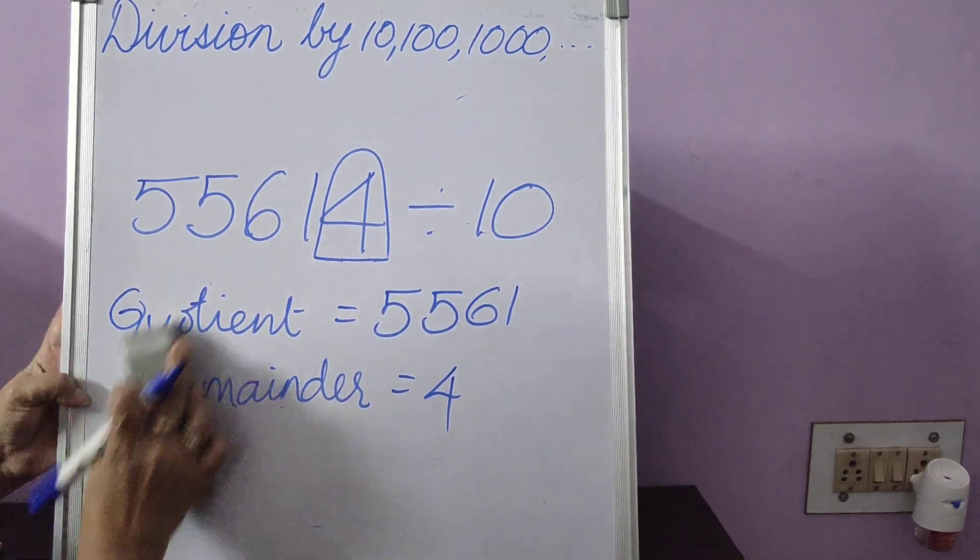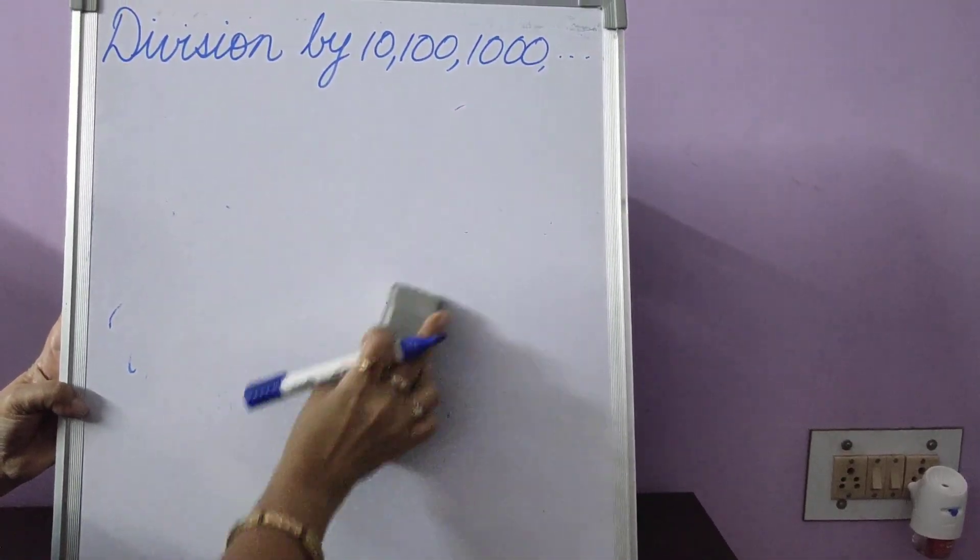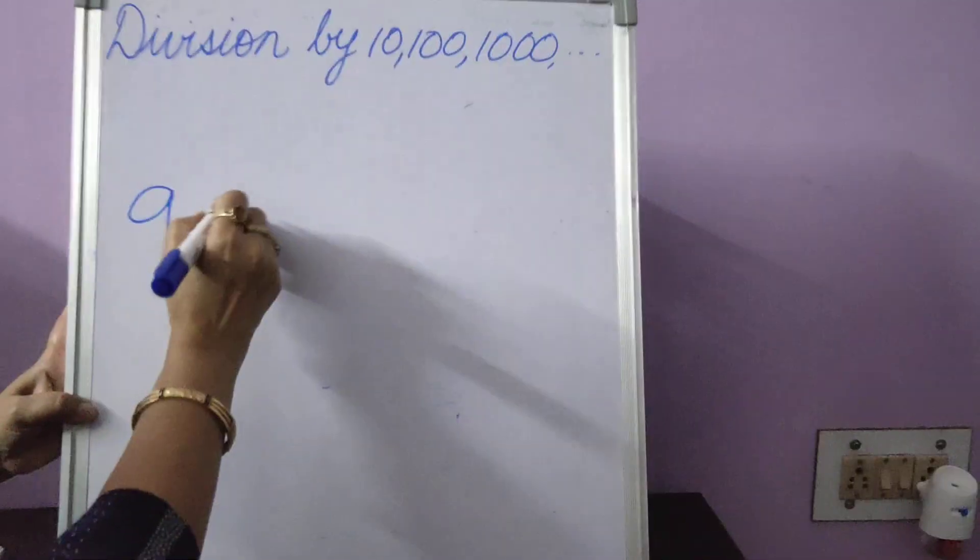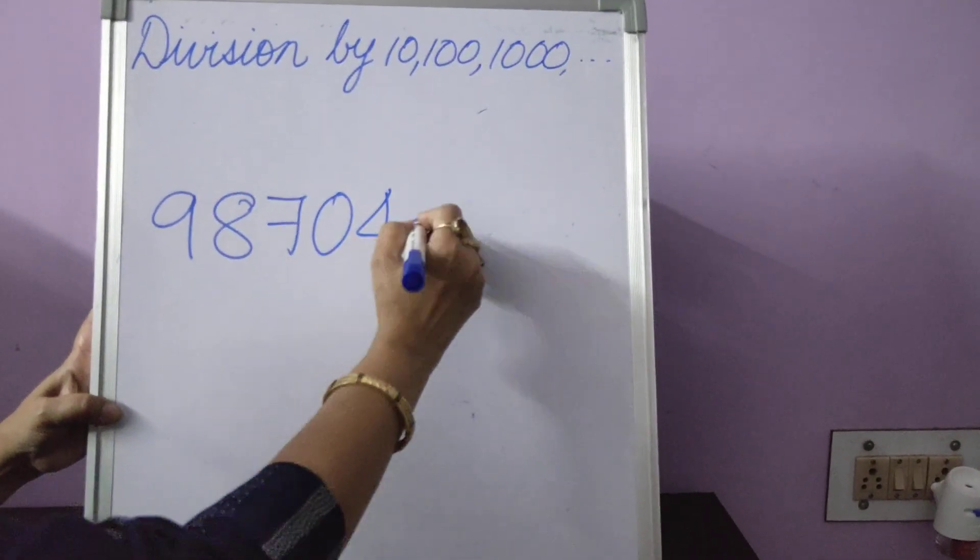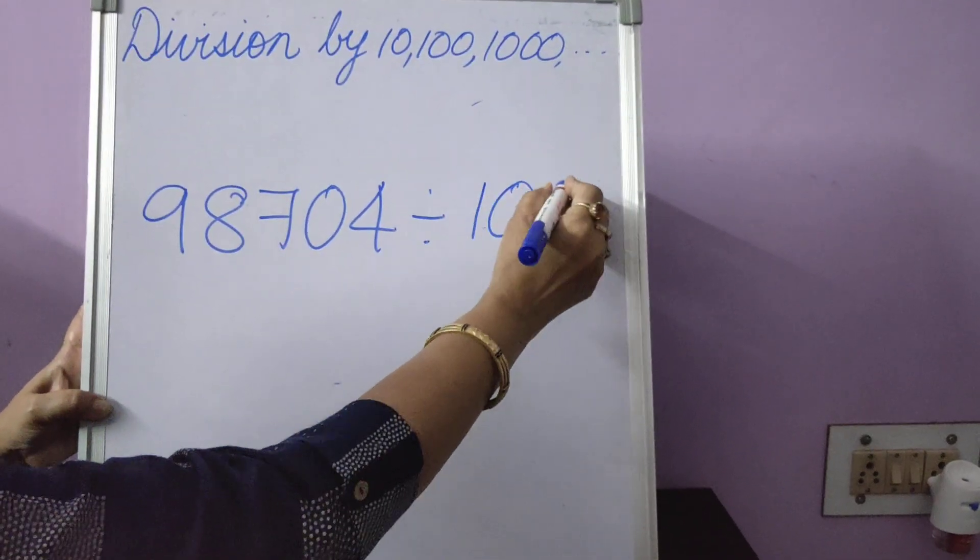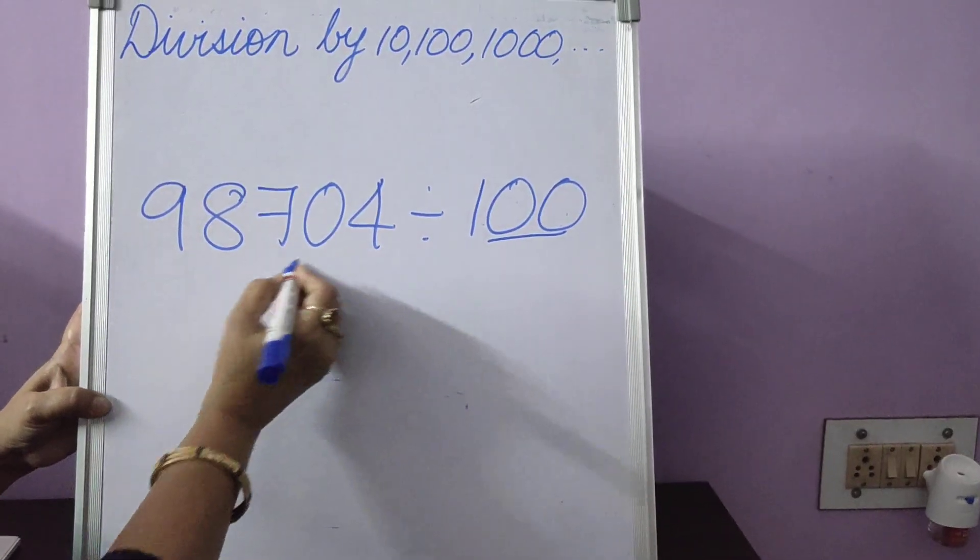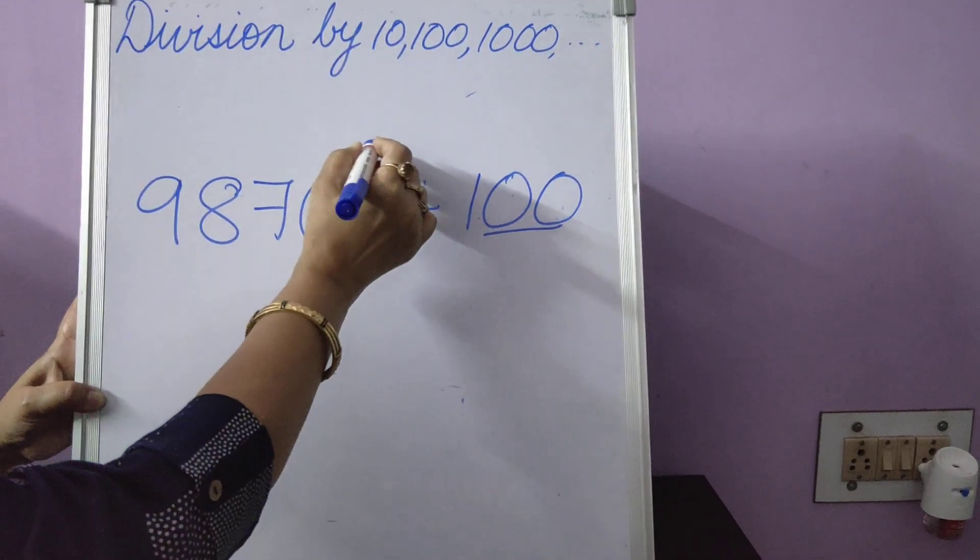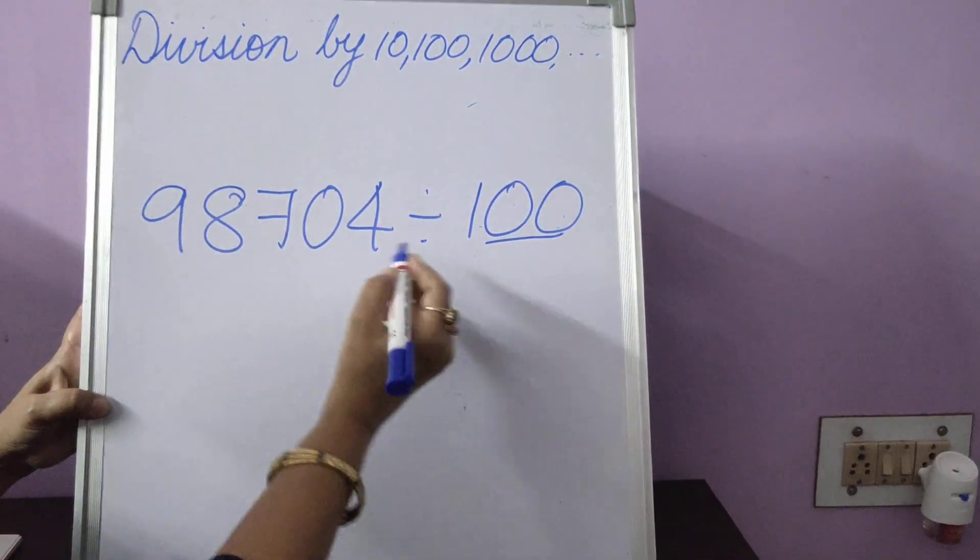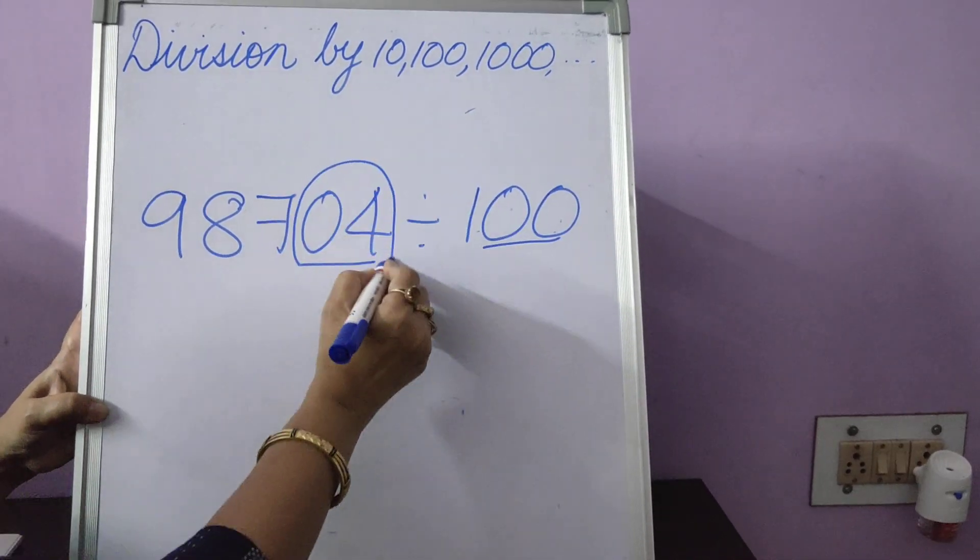Let's move on to 100. Same method we follow even for 100. Now the only difference you will see that comes in is 98,704 divided by 100. 100 has got how many zeros? Two zeros. So we count again two places from the right hand side. That is the ones and tens. You just remember two places. One, two. Again, put it in a circle.